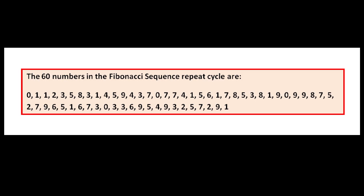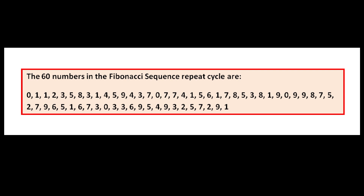Please watch my previous videos relating to this topic or buy a copy of my book on Amazon. Here are those 60 numbers. When you place them around the circumference of a circle they create a perfect clock as seen here. This Fibonacci clock encodes tons of mathematical information as you will learn in my books.